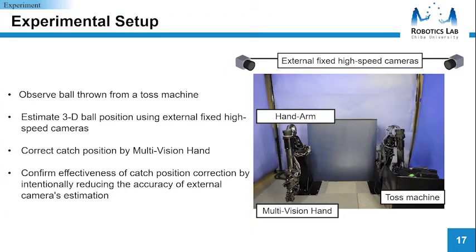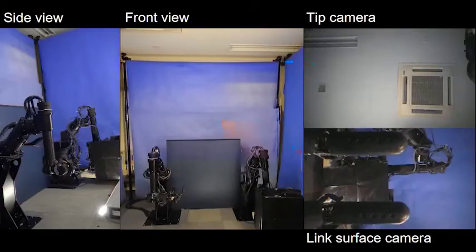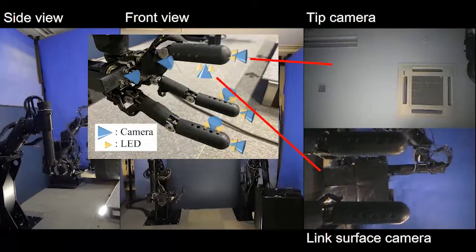In the experiment, the ball was thrown from a toss machine. The catch position was estimated by external fixed high-speed cameras and corrected by the multi-vision hand. We confirmed effectiveness of catch position correction by intentionally reducing the accuracy of external camera estimation. Here is the video of the experiment when the effect of the correction of the catch position was remarkable. Tip camera and link surface camera are some of the cameras mounted on the multi-vision hand.